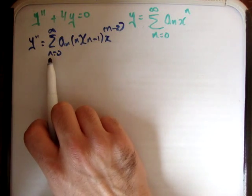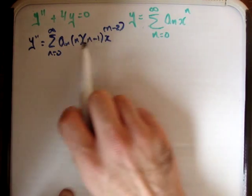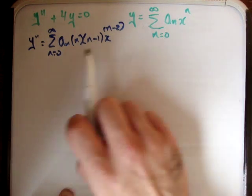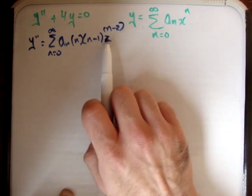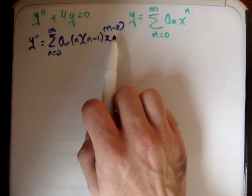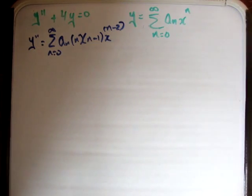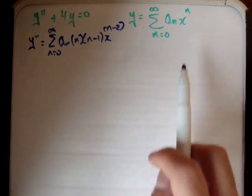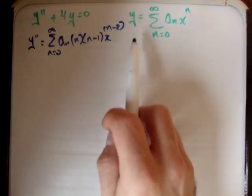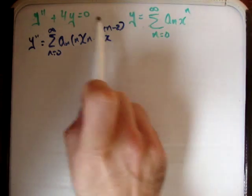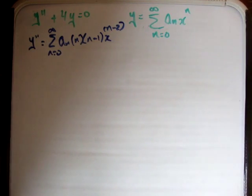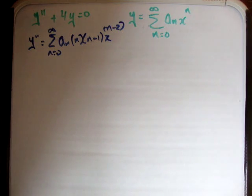In this case, y double prime and y prime both start at n equals 0. However, their powers differ: x to the n minus 2 versus x to the n. There are two ways of doing this — we can either shift this one downwards or shift this one upwards. The best way is to shift the y double prime value upwards.